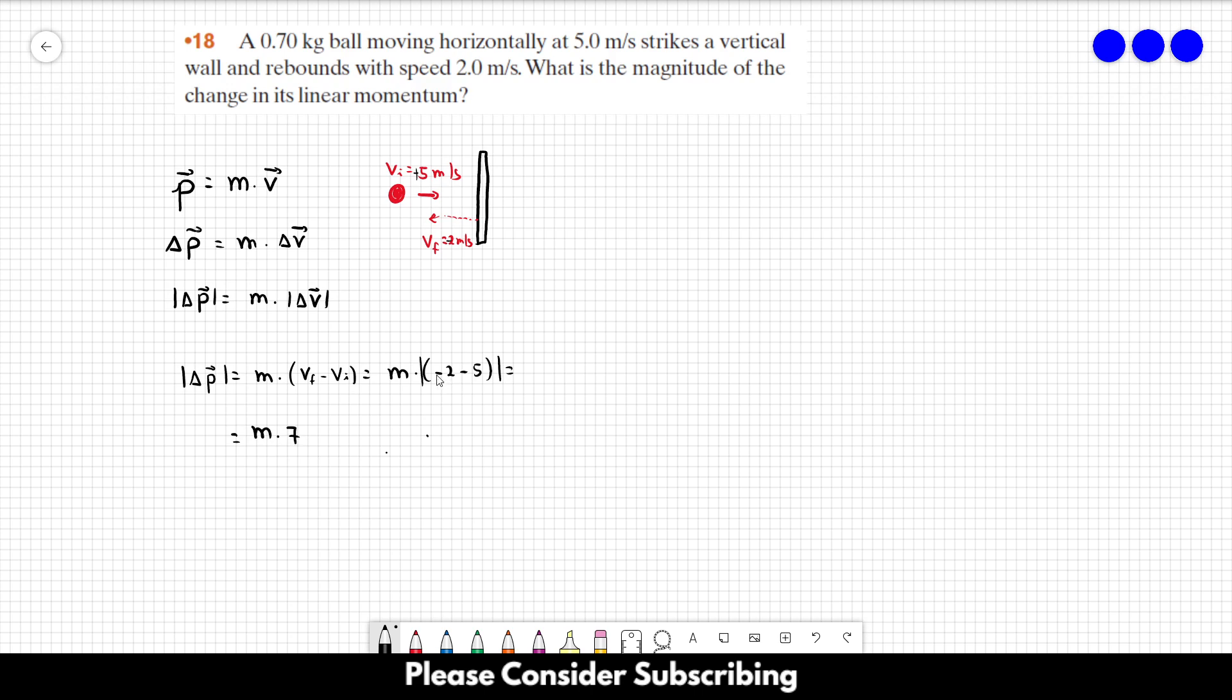Minus 2 minus 5 is minus 7, but we want the magnitude, so it's plus 7. The mass of the ball is 0.7 kilograms, which we multiply by 7 meters per second.